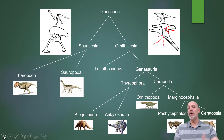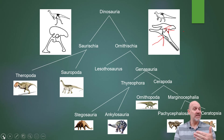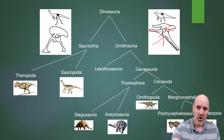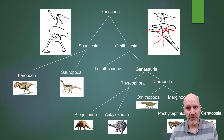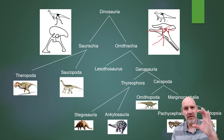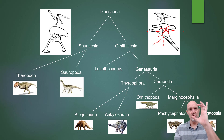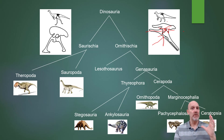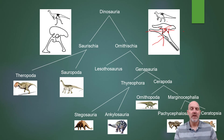Do you remember what the synapomorphy was for dinosaurs? Think about it. It was the perforated acetabulum, which was this hole right here in between the pubis, the ischium, and the ilia, or the ilium over here. So you have that hole that goes right through, and you could put your finger through. It's completely perforated, unlike a human hip area we looked at, which is basically closed up. So that was the synapomorphy for Dinosauria.